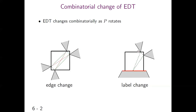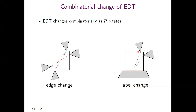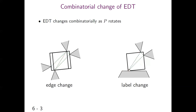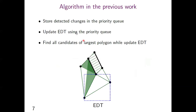The other case is a label change. In this case, an edge of P and an edge of Q touch each other when P rotates counterclockwise. In the label change, the vertex of P touching the left edge of Q is changed. I will only provide the number of label changes without details and focus on edge changes. For finding a largest similar copy of P, the algorithm stores the detected changes in a priority queue, then updates EDT using the priority queue. While updating and maintaining EDT, the algorithm also finds all candidates of the largest polygon.